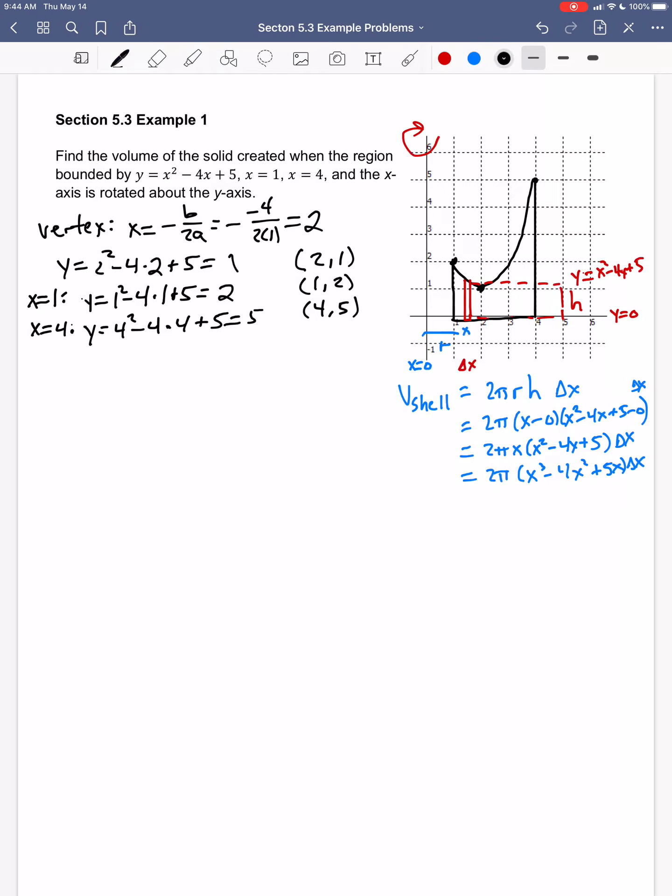So my overall volume for this solid, I'm going to integrate as my x coordinate goes from 1 to 4. My volume is 2 pi times the integral from 1 to 4 of x cubed minus 4x squared plus 5x dx.